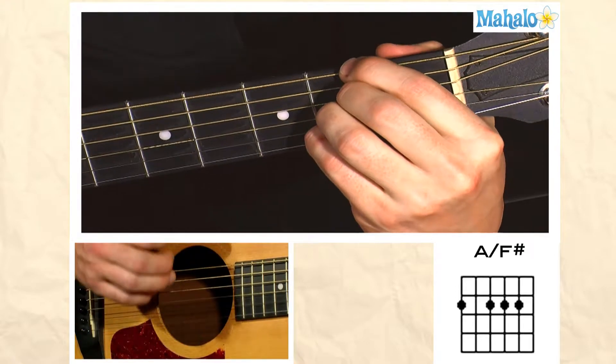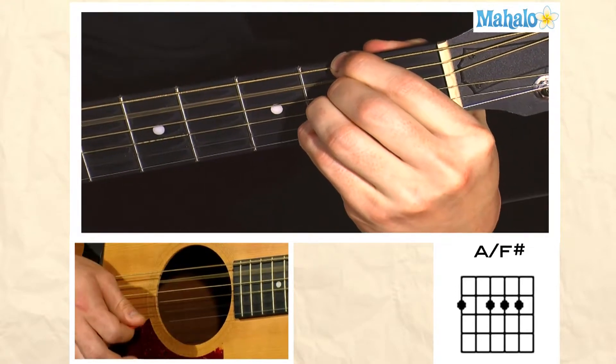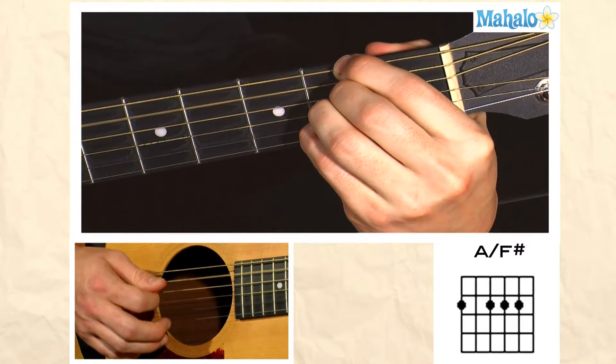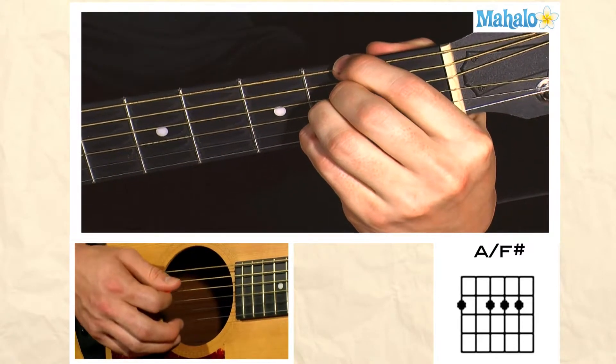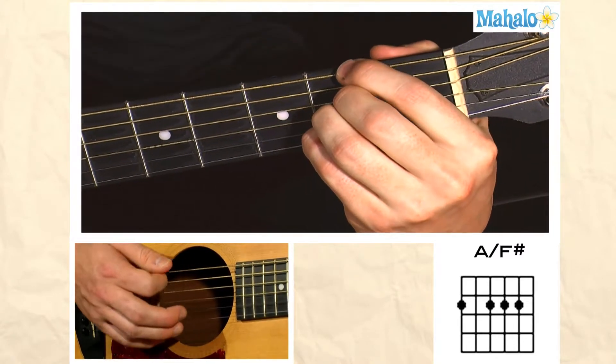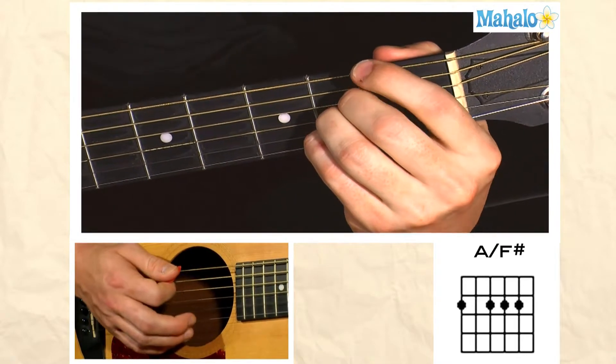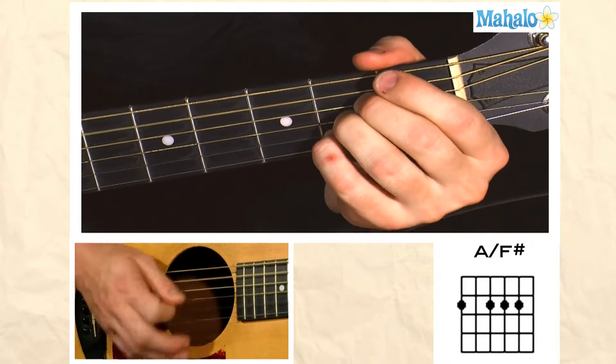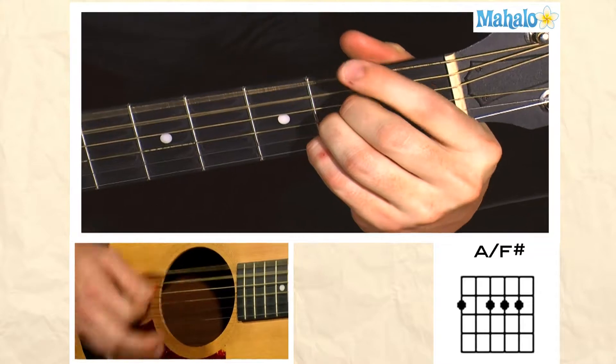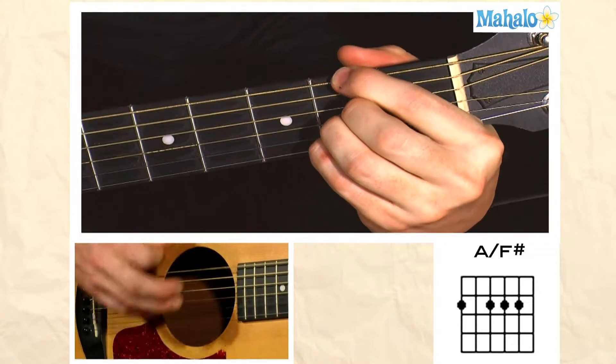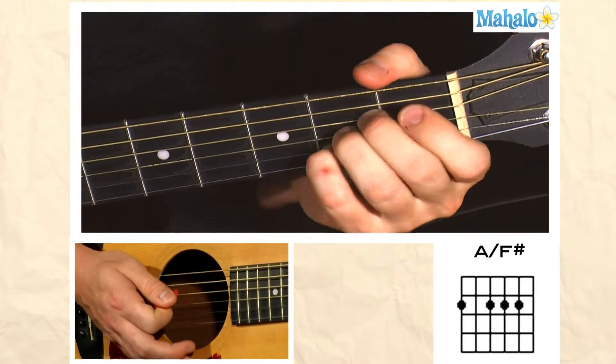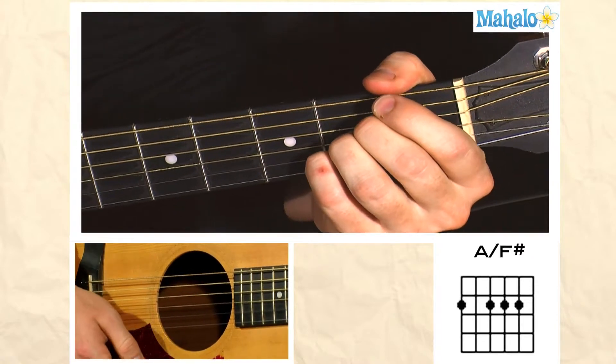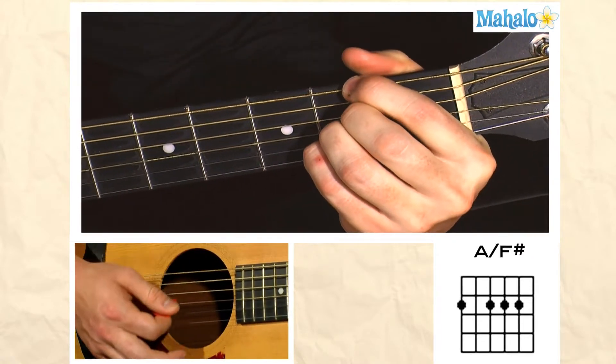Here is the A major with the F sharp bass, and usually it's used as a passing chord. People will play like this. I'm sure you can name that song. So that's the A over F sharp.